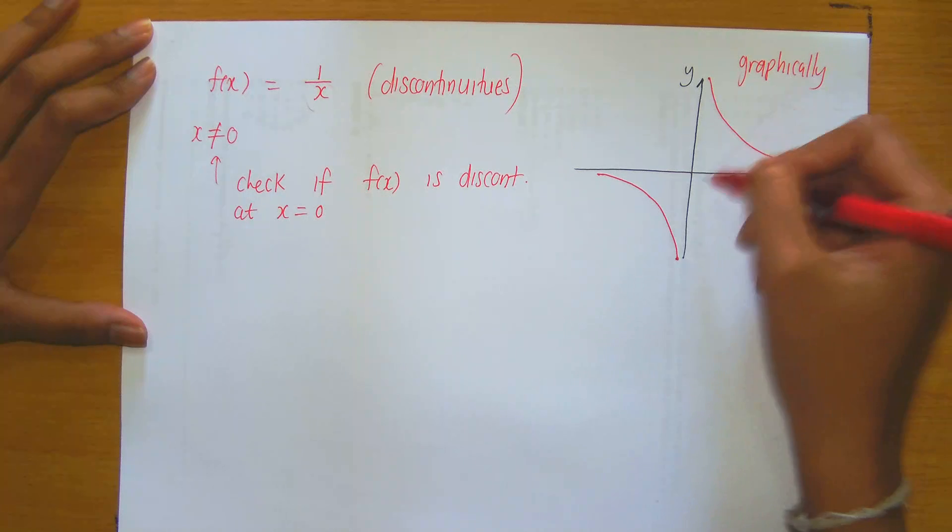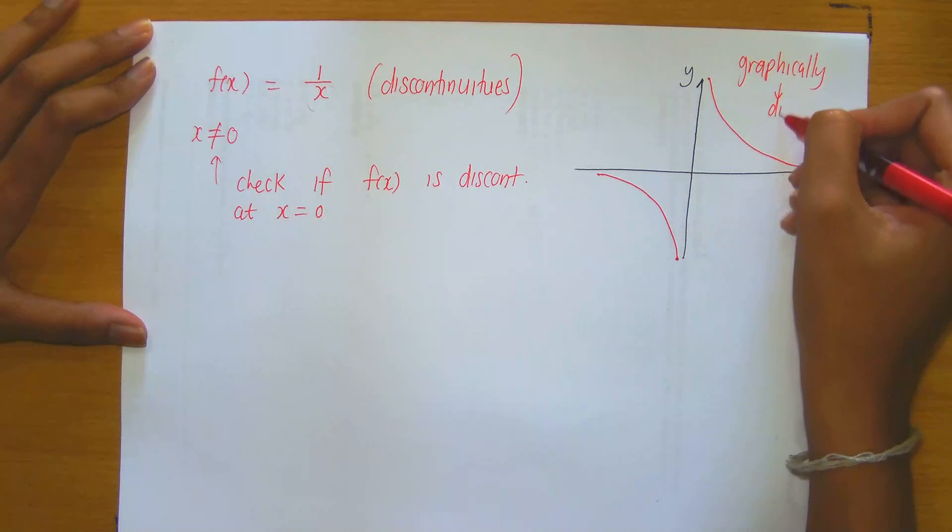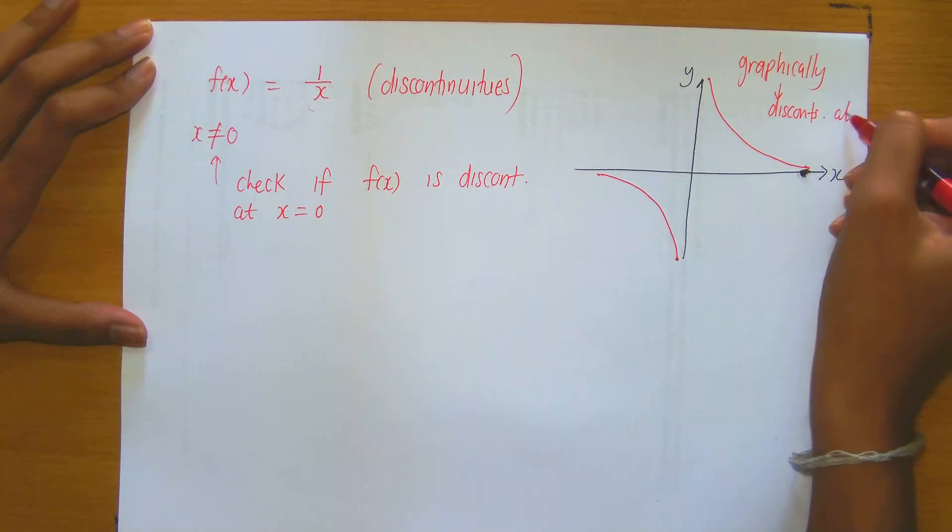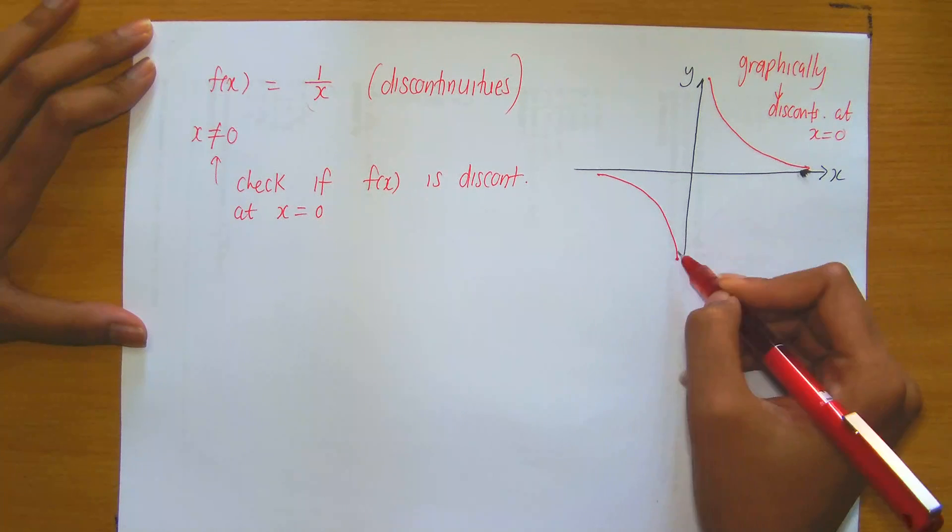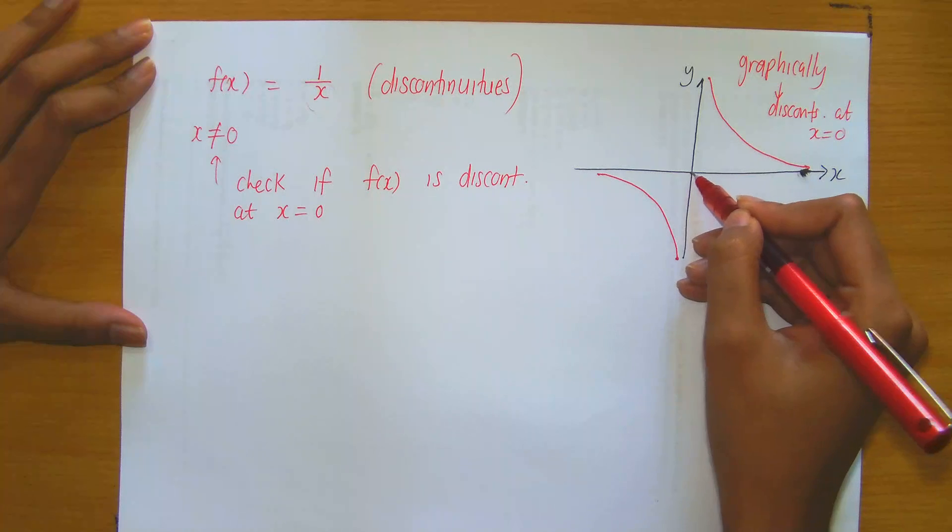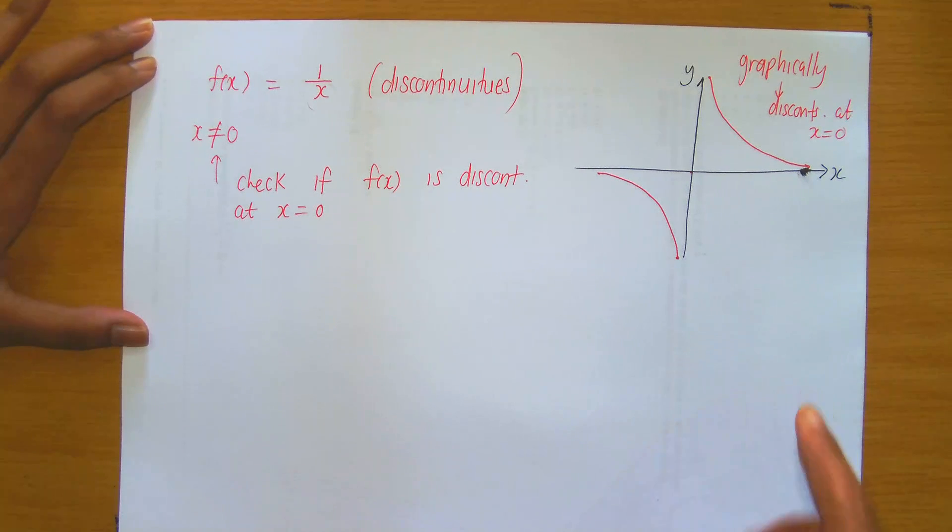Immediately, you could guess from graphically that it's discontinuous at x equals 0, because I lifted my pen as I approached x equals 0 and jumped to the top.